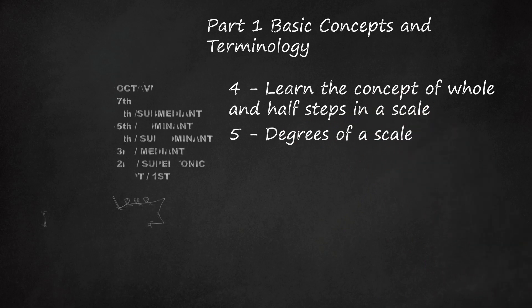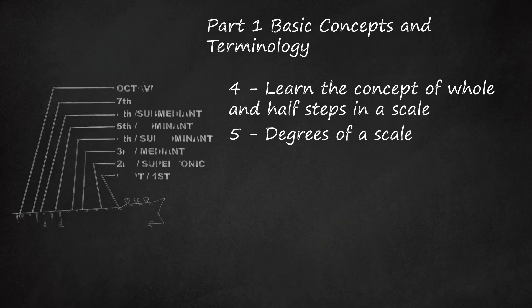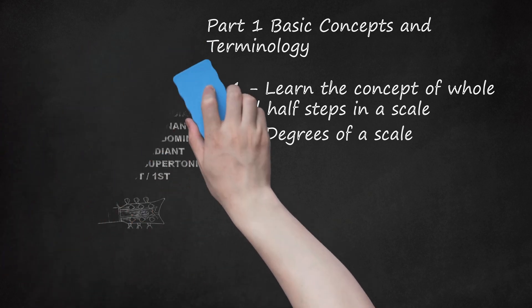Degrees of a Scale. Since scales are sequences of notes played in order, scale notes get special numbered names called degrees to help you identify them. The note you start on is called the root or first, also sometimes called the tonic. The second note is the supertonic, the third is the mediant, the fourth is the subdominant, the fifth is the dominant, the sixth is the submediant, and the seventh has names that change depending on the scale. The eighth note is the octave — also called the tonic because it's the same note as the first, only higher. After the octave, you can start over from the second or keep going from the ninth.